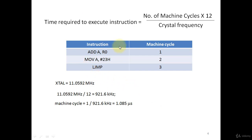Here, ADD is the instruction who takes 1 machine cycle to complete its operation. Similarly, move A comma hash 23h instruction takes 2 machine cycles to complete the operation. Long jump instruction takes 3 machine cycles.